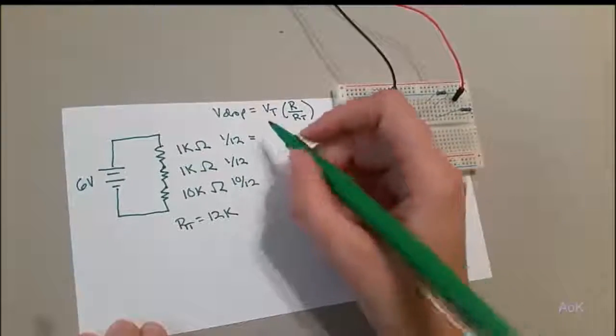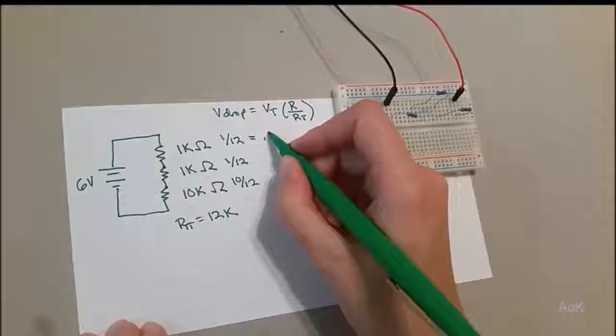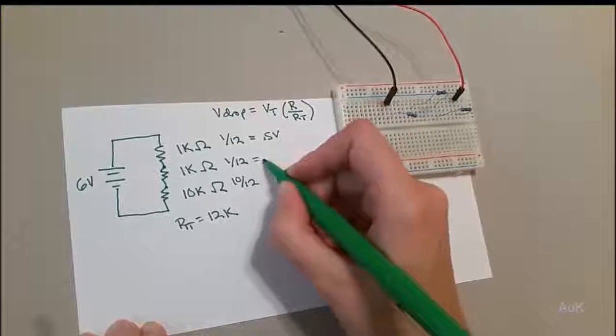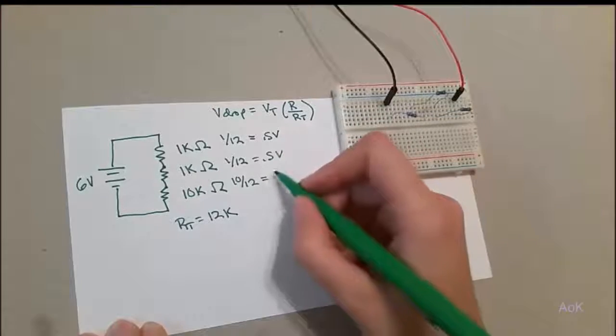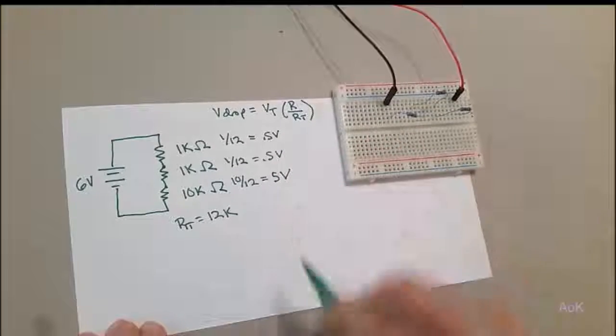So the first resistor should be exactly half a volt. And the last one should be a 5 volt drop.